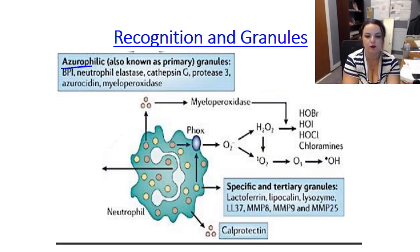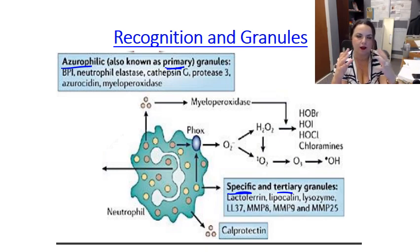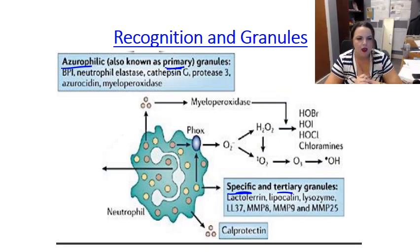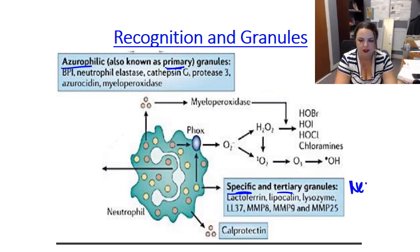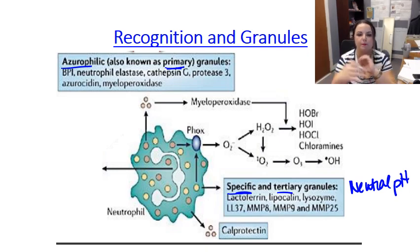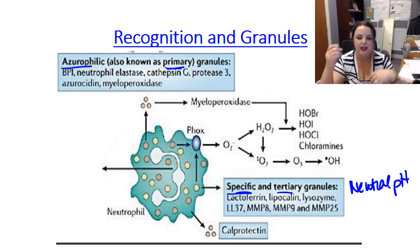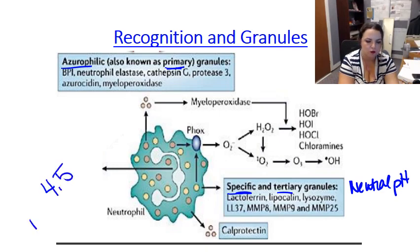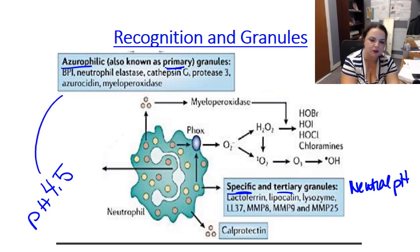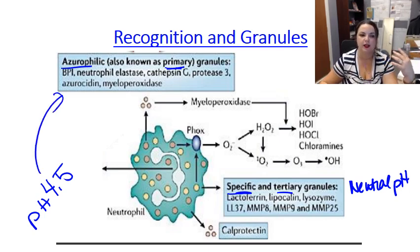There are two types of granules ready in the phagosome: azurophilic (primary) granules and specific and tertiary granules. The azurophilic granules have a beautiful blue color, making them easy to identify. The specific granules degranulate first; they contain proteases and hydrolases active at neutral pH — which is the initial pH of the phagosome. As the organism dies, potassium and hydrogen ions are drawn in, decreasing the pH to about 4.5.